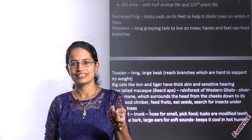Big cats — mainly lions and tigers — are seen in the tropical region and have very sensitive hearing, detecting prey by their hearing capacity alone. They are commonly seen in rainforest areas such as the Western Ghats and northeast India. Elephants are also a very common creature, with a trunk and tusks. The tusks are modified teeth and are unfortunately the reason for poaching. Elephants have very large ears to absorb maximum sound, keeping them aware of upcoming threats.